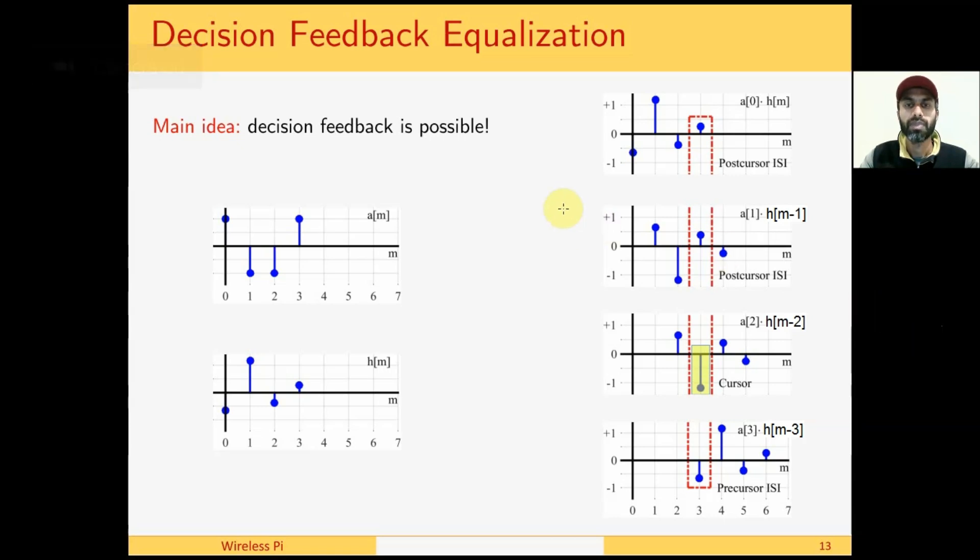Decision feedback equalization - remember that we said a zero forcing equalizer is computationally very simple owing to its linearity, but its performance is worse than most equalization strategies. A way to improve the performance of a linear equalizer is to employ decision feedback.